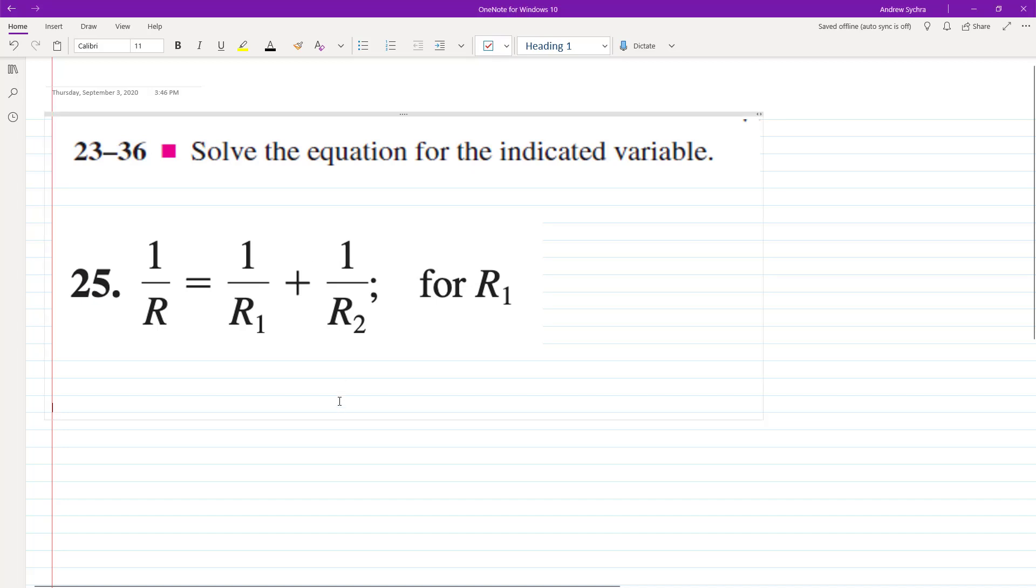All right, so let's go ahead for this problem. Let's solve for R sub 1. First thing we can do, there's a few ways we can do this, but we'll get R1 by itself. So we'll subtract both sides by 1 over R2. So we end up with 1 over R minus 1 over R sub 2 equals 1 over R1.